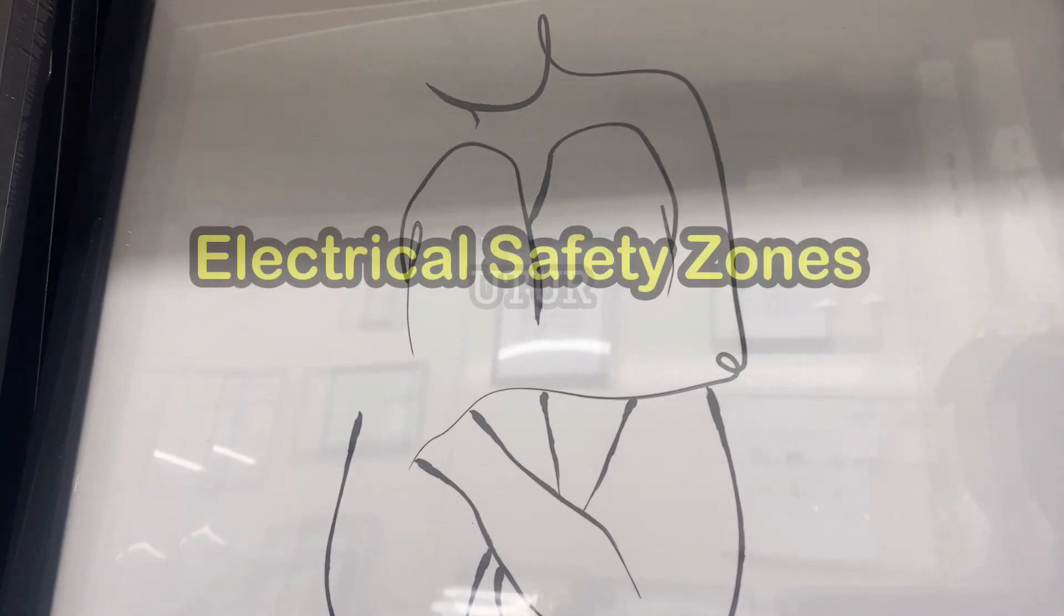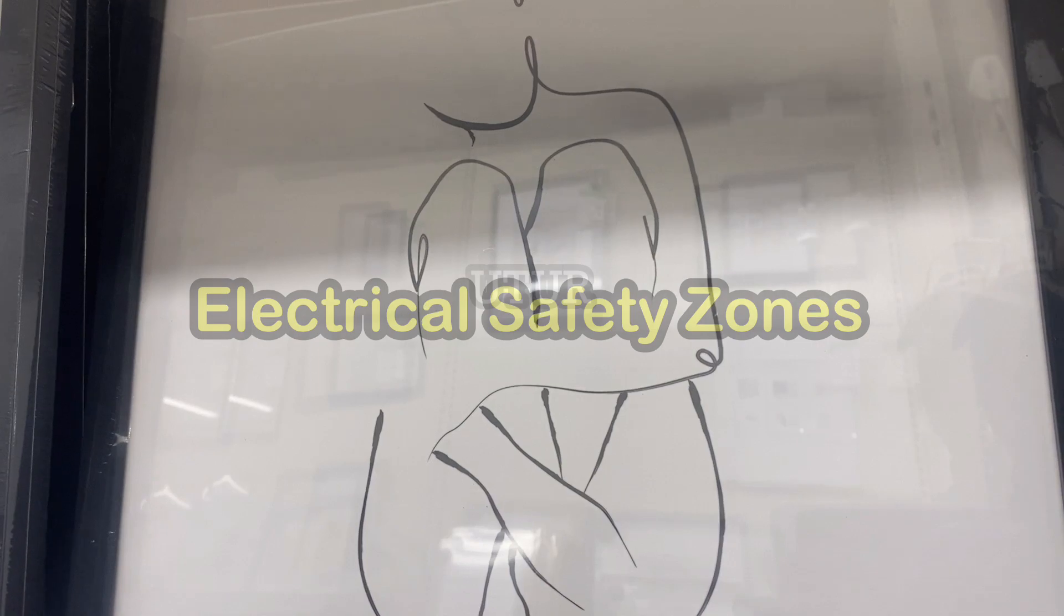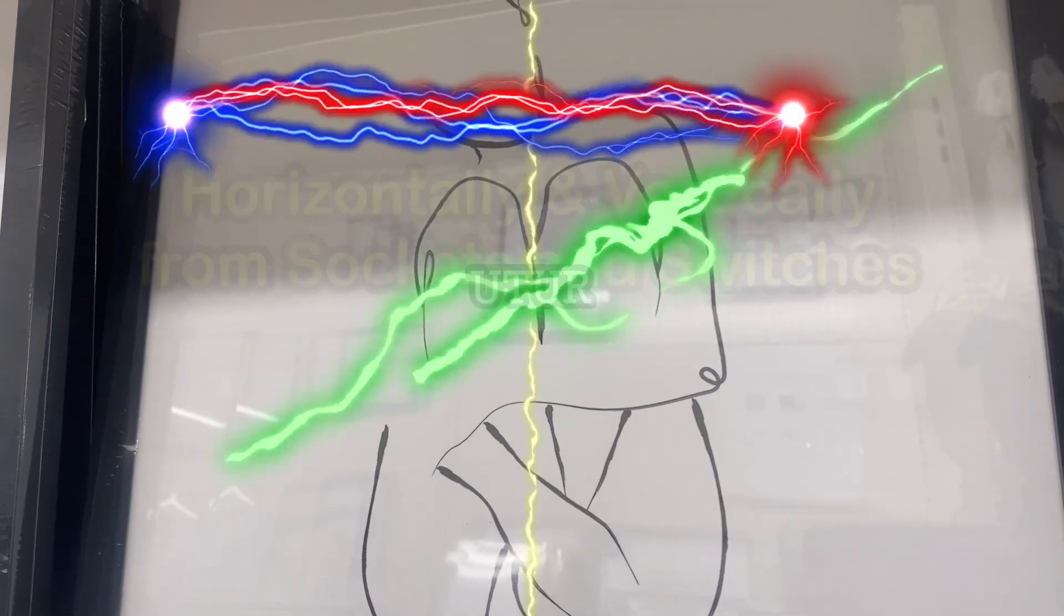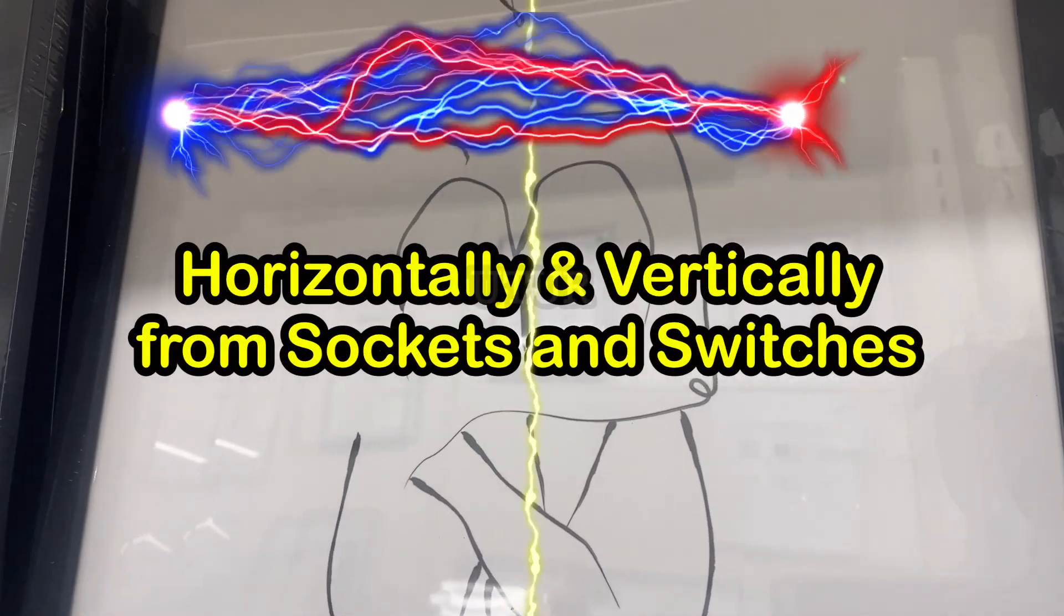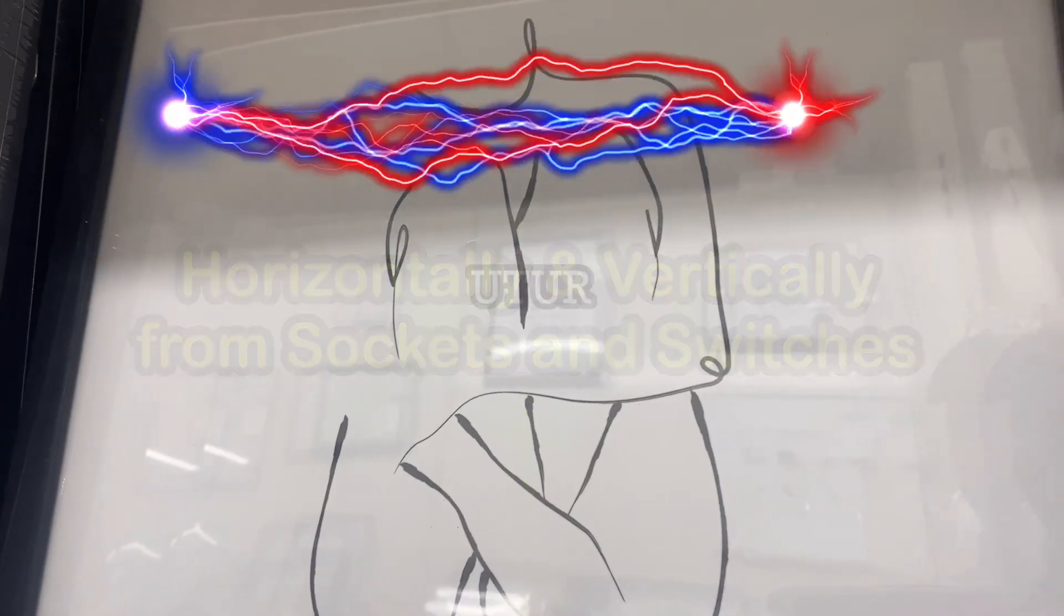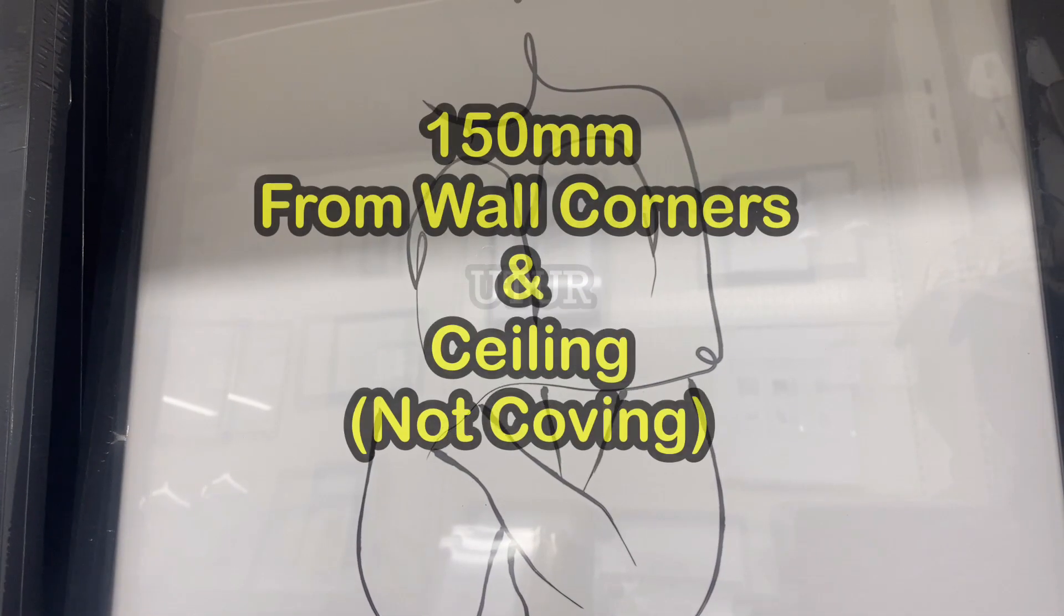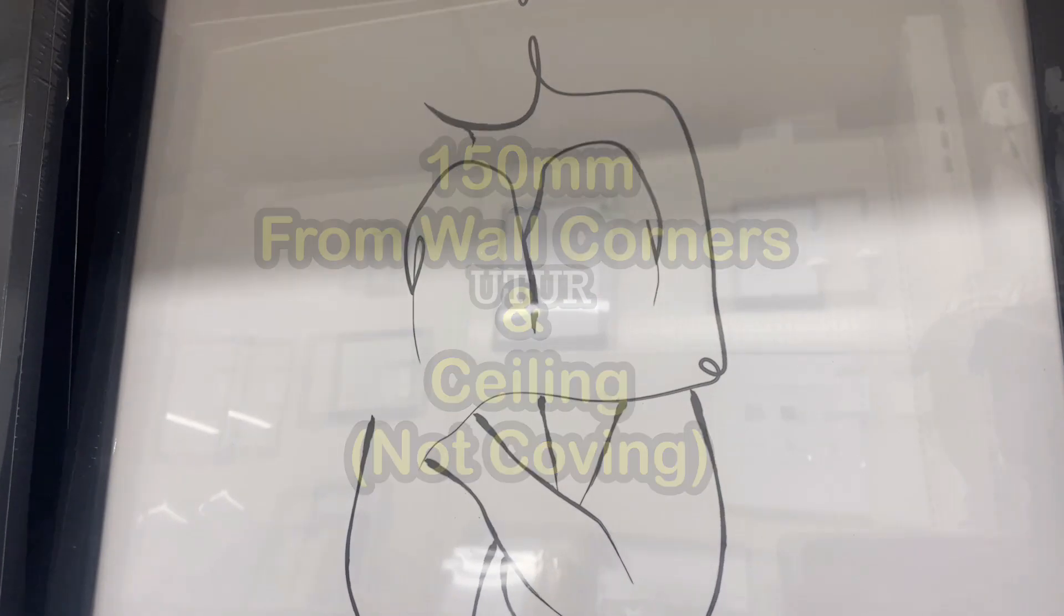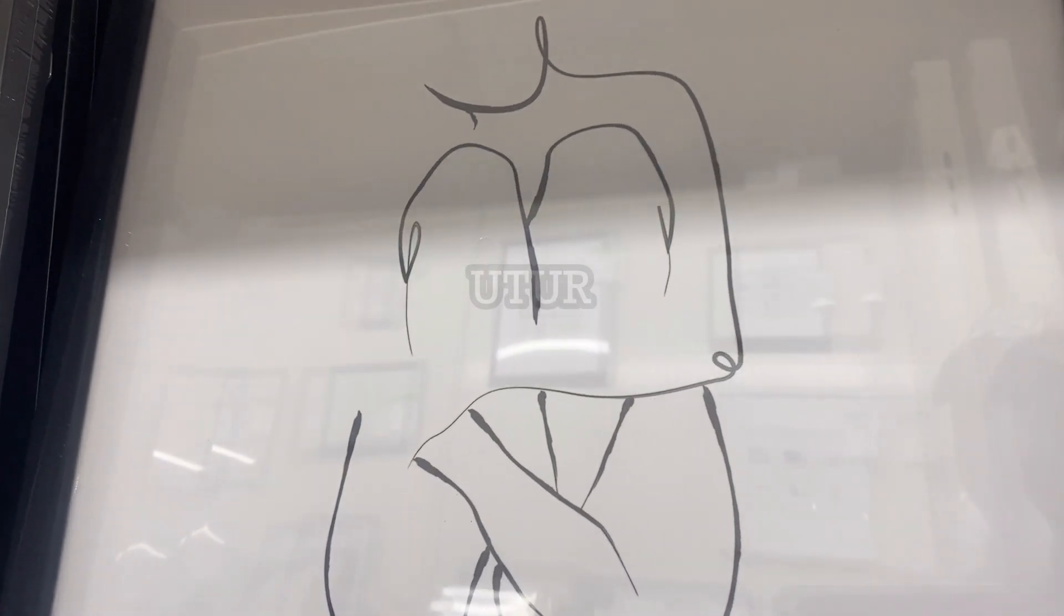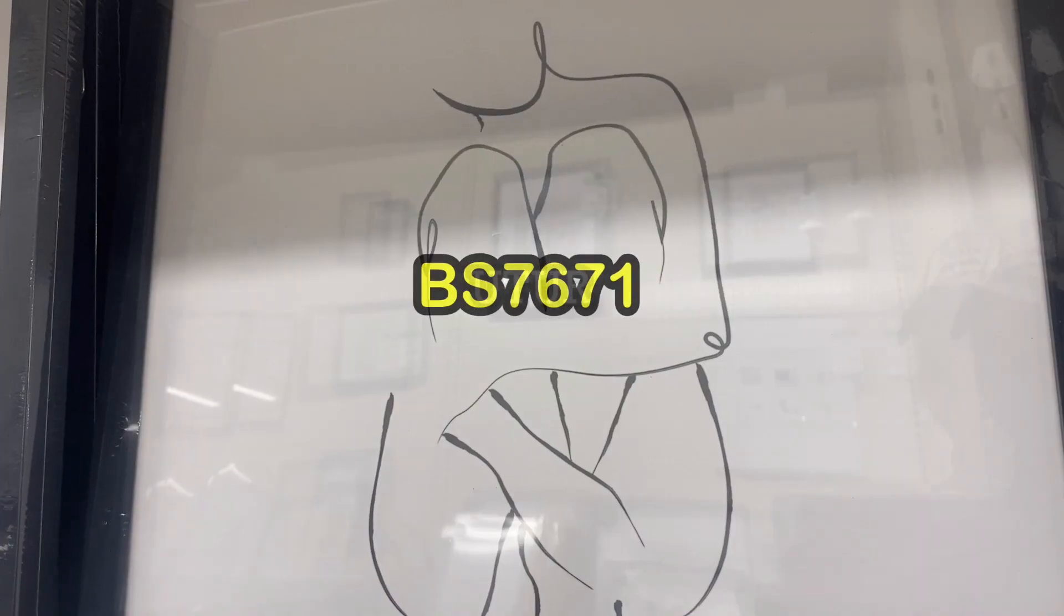And that's where your electrical safety zones come into play. Ideally, you shouldn't be drilling horizontally or vertically from sockets or switches, and 150mm from wall corners and ceiling, but not the ceiling coving.